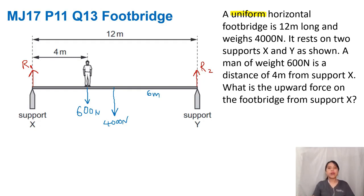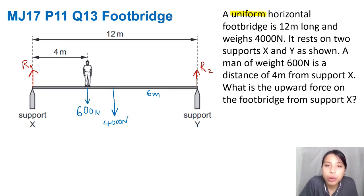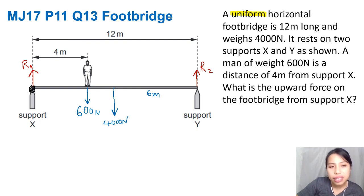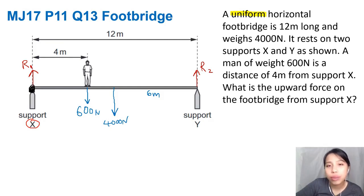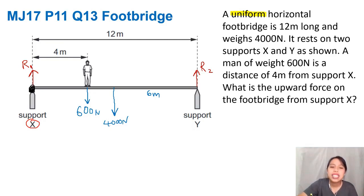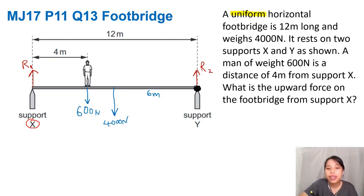Next, you choose a pivot. You can choose it at any point along the entire line, but where you choose it will either make your job easier or harder. We could choose the pivot at support X, but there's a problem: if we choose X as the pivot, R1 has no effect, so we won't have an equation with R1 inside. So let's choose the pivot at Y — that gives us an equation of torque with R1 inside, and we also get rid of R2 since R2 is exactly at the pivot.